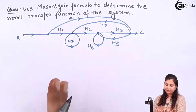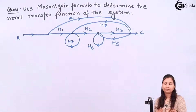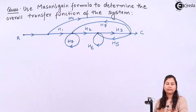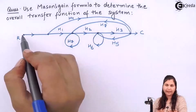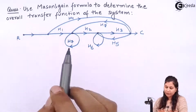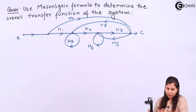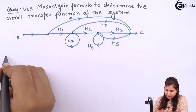This is the signal flow graph of the system, and for this signal flow graph we have to find out the transfer function — that is, the ratio of C by R — using Mason's gain formula. Our first step is to find out the forward paths of the system.